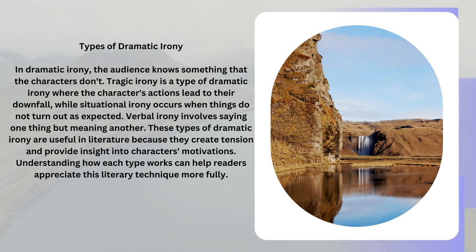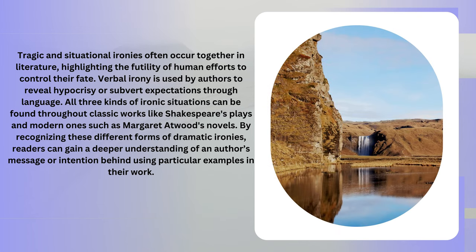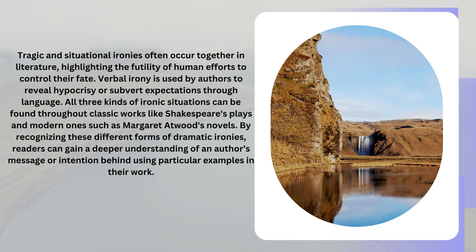These types of dramatic irony are useful in literature because they create tension and provide insight into characters' motivations. Understanding how each type works can help readers appreciate this literary technique more fully. Tragic and situational ironies often occur together in literature, highlighting the futility of human efforts to control their fate. Verbal irony is used by authors to reveal hypocrisy or subvert expectations through language. All three kinds can be found throughout classic works like Shakespeare's plays and modern ones such as Margaret Atwood's novels.